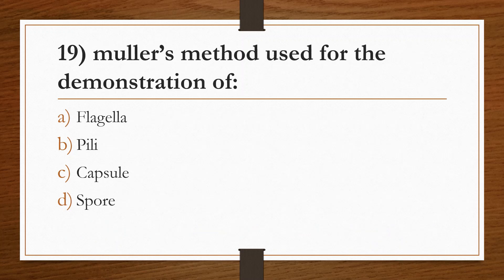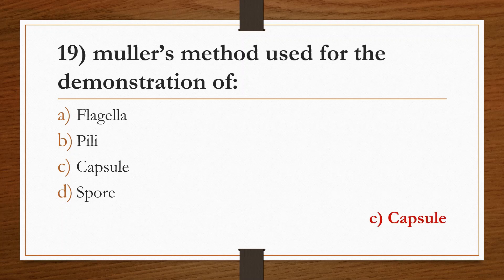Nineteenth question: Muller's method is used for the demonstration of Option A: flagella. Option B: pili. Option C: capsule. Option D: spore. Answer is Option C, capsule.